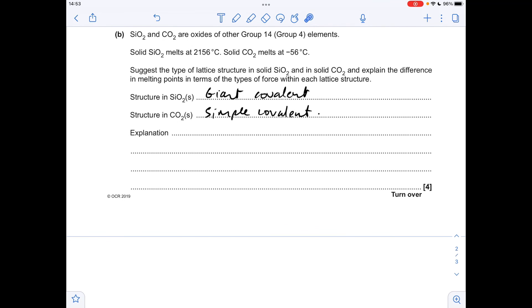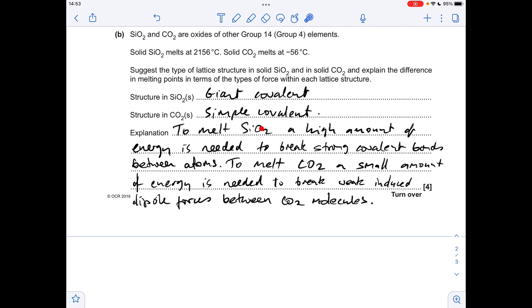And finally, part B. The structure in solid silicon dioxide is giant covalent, and in solid carbon dioxide is simple covalent. So why have we got these very different melting points? It's because if you want to melt silicon dioxide, you need a high amount of energy to break the strong covalent bonds between the atoms, the silicon and oxygen atoms, whereas to melt carbon dioxide, you'll need a small amount of energy to break the weak induced dipole forces that exist between the CO2 molecules.